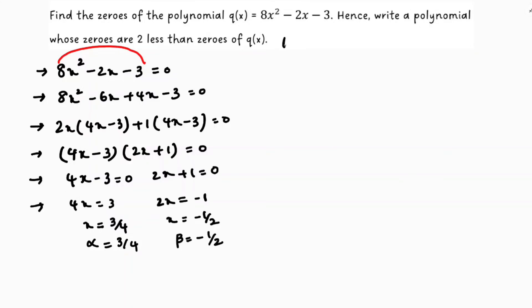So here you can write like new zeros to show the difference. So alpha minus 2 I need to find, and beta minus 2. Alpha was 3 by 4 minus 2, beta is minus 1 by 2 minus 2, because 2 less than the zeros of q(x). So here LCM is 4, so 3 minus 8 is minus 5 by 4. And here LCM is 2, minus 1 minus 4 which is minus 5 by 2.